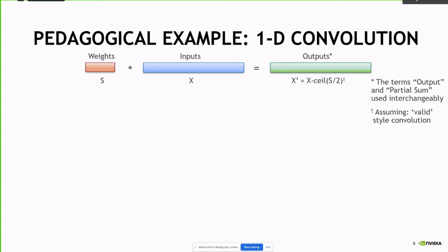I'm going to start with one-dimensional convolution. This is a building block which allows us to get back to the full 7D loop nest. So let's say we have a one-dimensional vector of weights, a one-dimensional vector of inputs, and we want to produce a one-dimensional vector of outputs. We have that sliding window Tishar mentioned — you could think of it like a Gaussian blur.